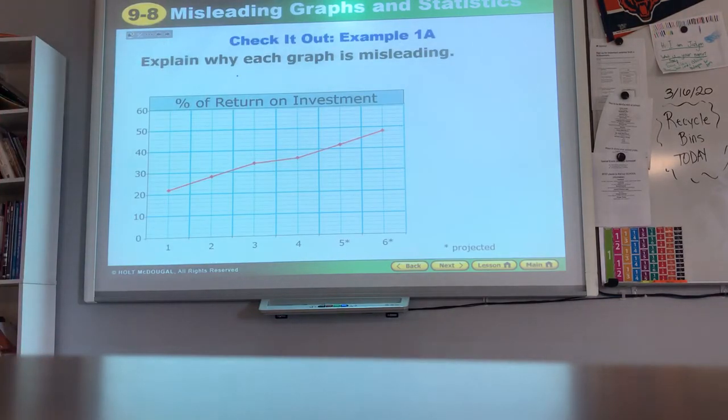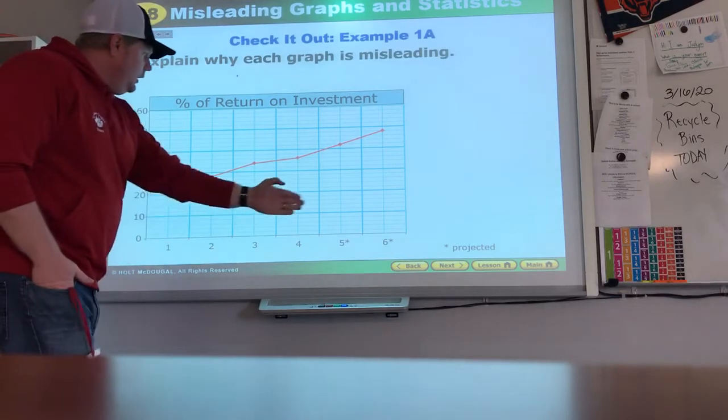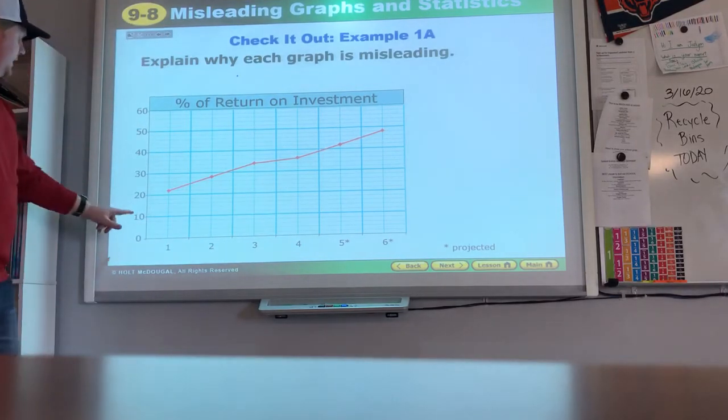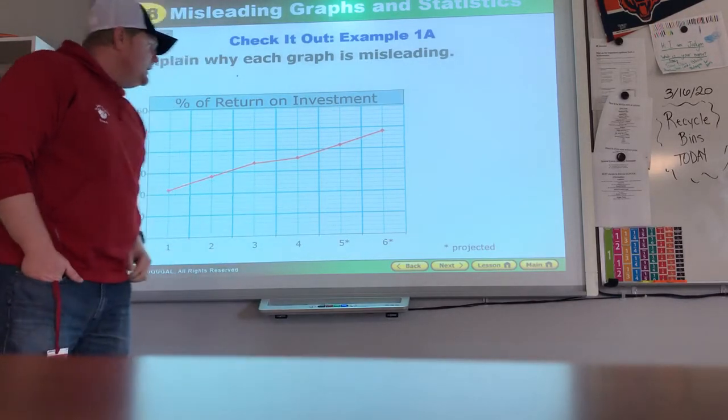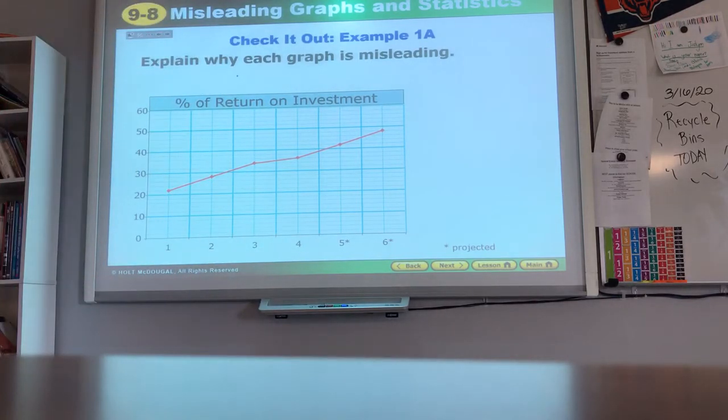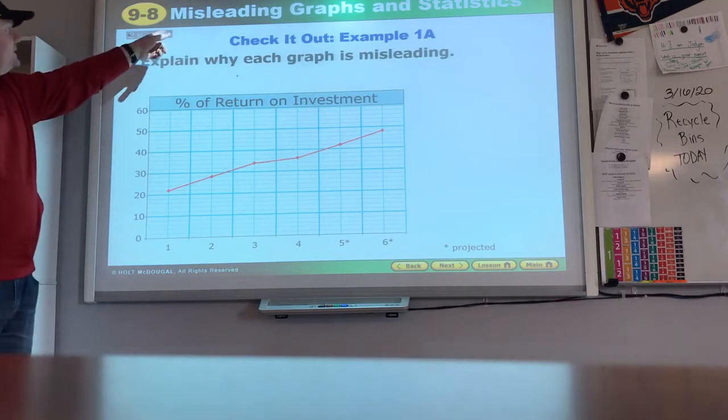We look at this one so we see all things are the same size. We gain by 10 each time here. We gain by 1, 2, 3, 4, 5, and 6 there. All right, percent of return on investments. Why might this be misleading? All right, well let's look at what they say.